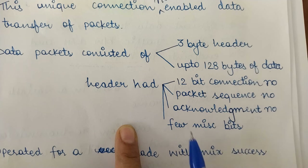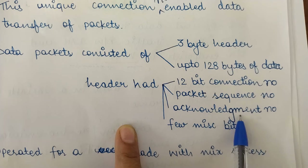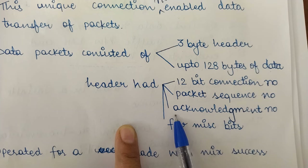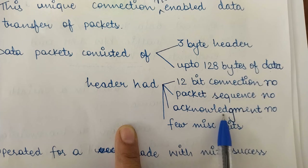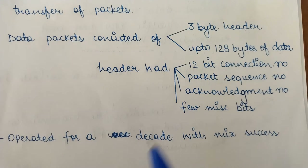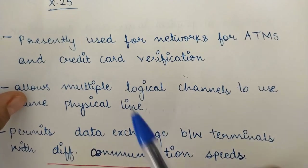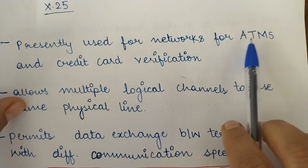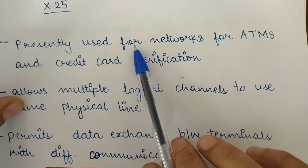Since X.25 is a connection-oriented service, it provided acknowledgement for each packet received. The acknowledgement number was used to tell the sender that a specific packet had been received. This network operated for almost a decade with mixed success. Presently, X.25 is used for automated teller machines (ATMs) and credit card verification.